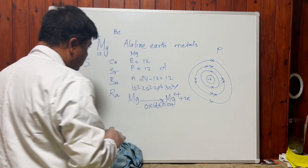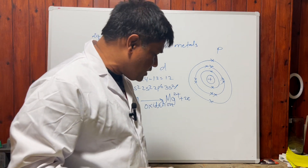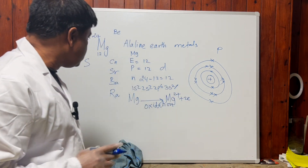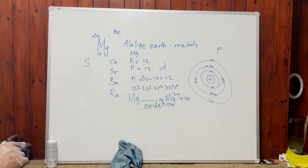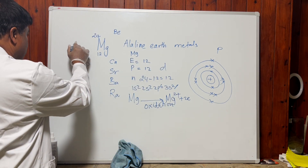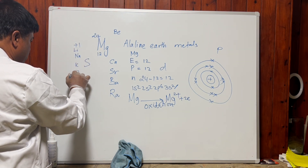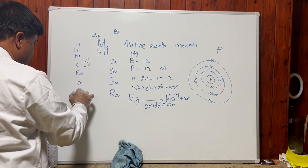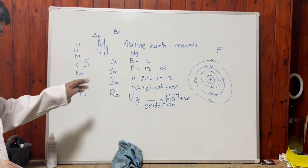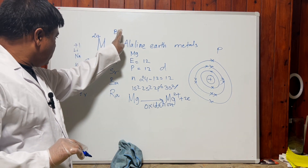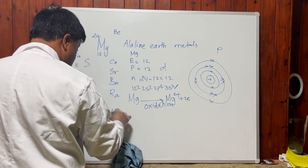Metals always give away electrons — the basic tendency of a metal is to lose electrons. The oxidation state of group 2 elements is +2. The oxidation state of group 1 elements is +1 — lithium, sodium, francium — all +1, and reactivity increases down the group. Magnesium is a light metal.